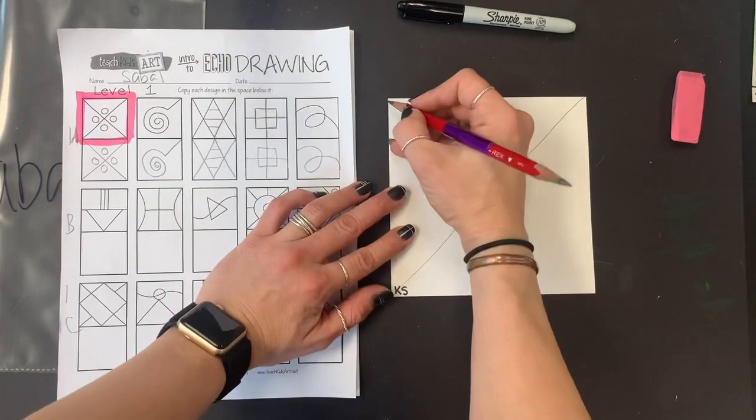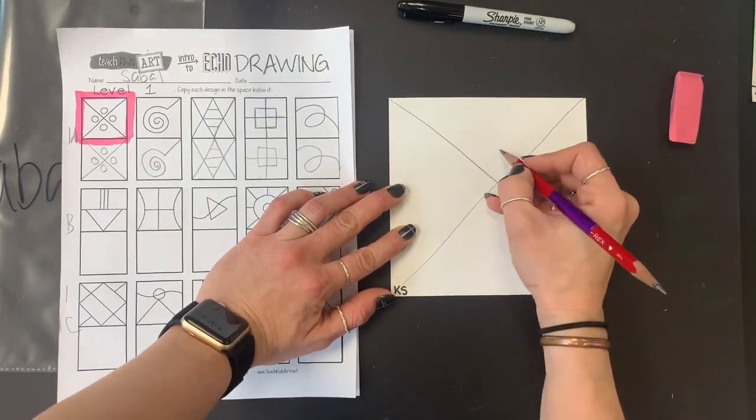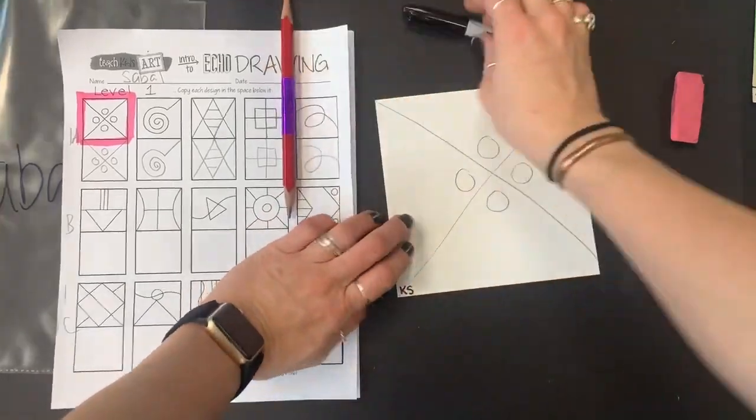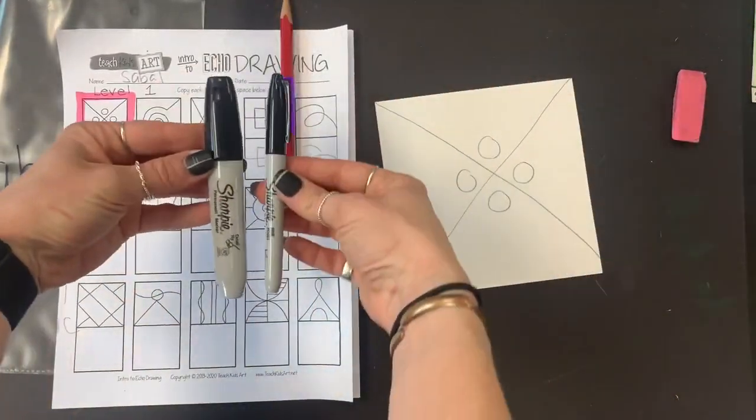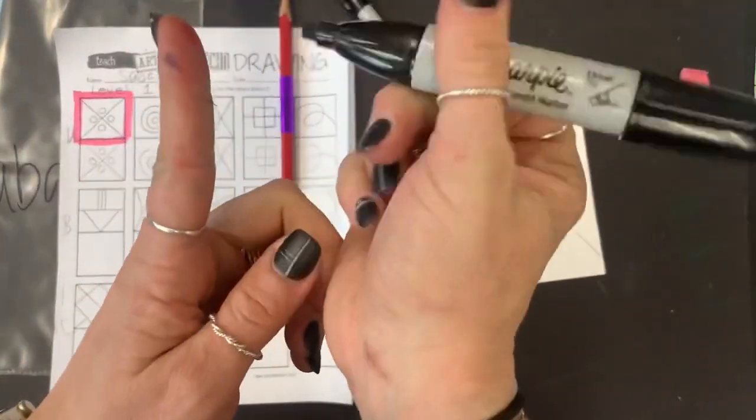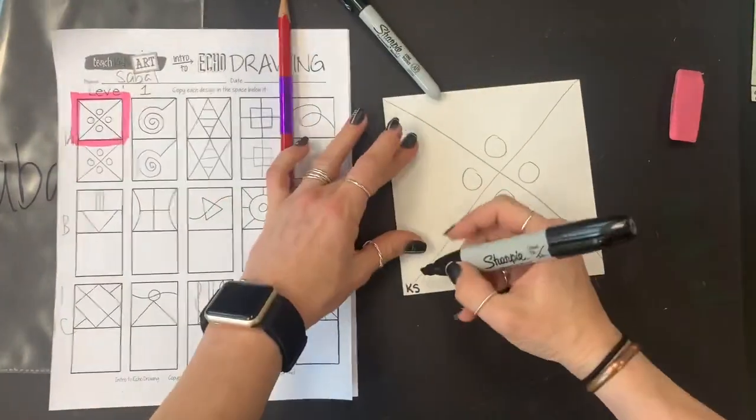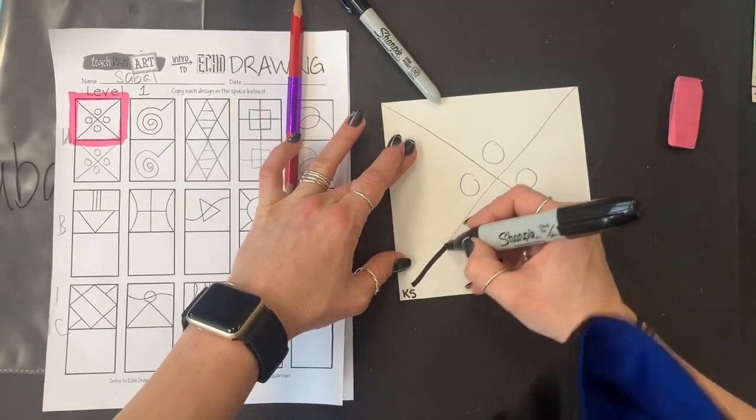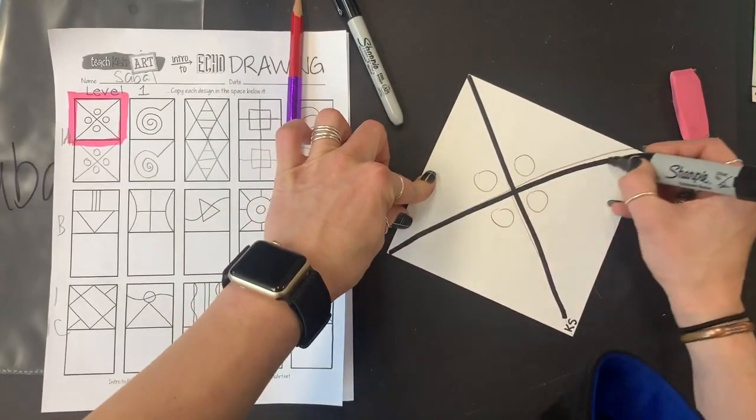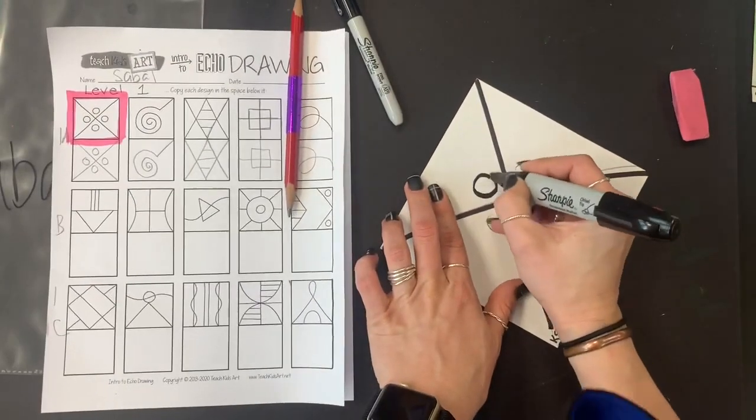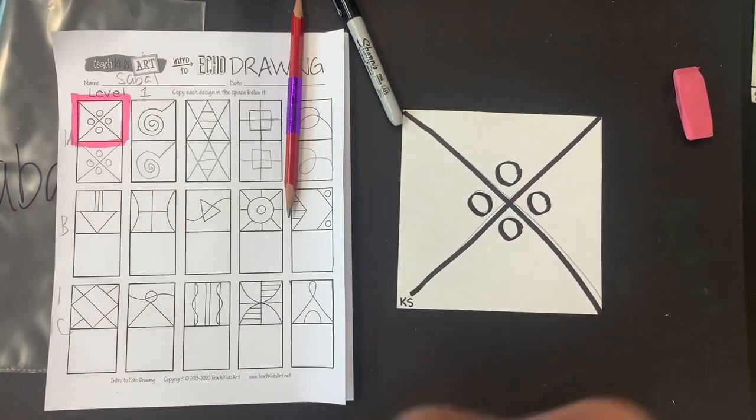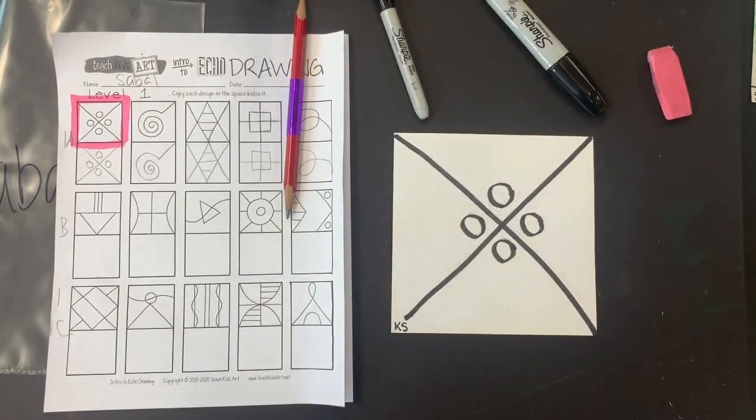Then, you can use either Sharpie, thick or thin. I like the thicker one because it makes a nice bold line. I'm going to use this flat edge and trace all of my pencil lines. Then, erase. And now, I'm ready to add color.